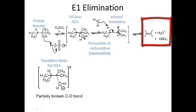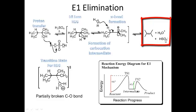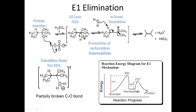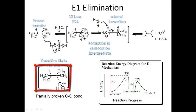I also get the conjugate base of sulfuric acid. Here's the energy diagram for the E1 mechanism — the rate-determining step as well as the formation of the alkene. Notice I'm going from reactant to intermediate, which is the carbocation intermediate, and then from intermediate to product, which is the alkene. The transition state for that first rate-determining step is seen here.